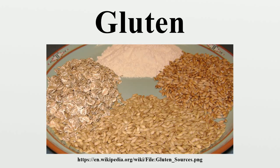Gluten contains hundreds of proteins, which have low biological and nutritional value and high contents of prolamins, as opposed to the grains of pseudo cereals, which are rich in proteins with high biological value. True gluten is limited to certain members of the grass family. The stored proteins of maize and rice are sometimes called glutens, but their proteins differ from true gluten.